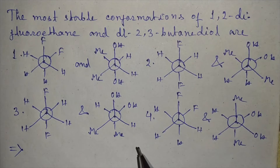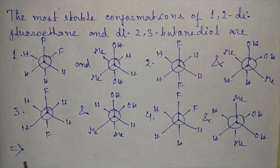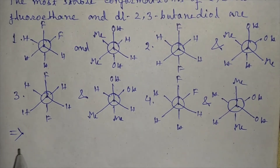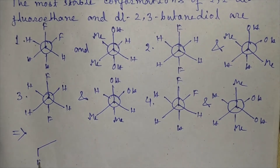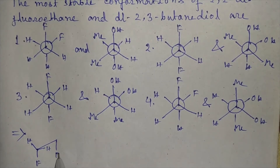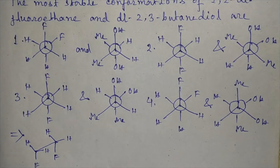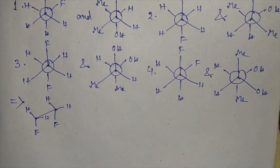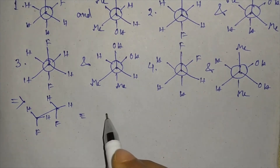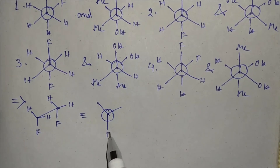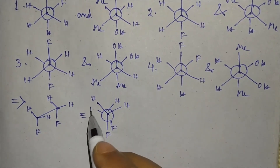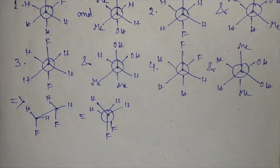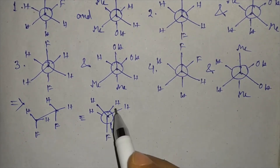We can represent 1,2-difluoroethane in a Sawhorse projection formula, and it can be converted to a Newman projection. We will get the conformers if we rotate the back carbon.